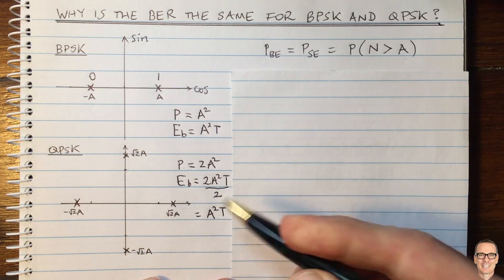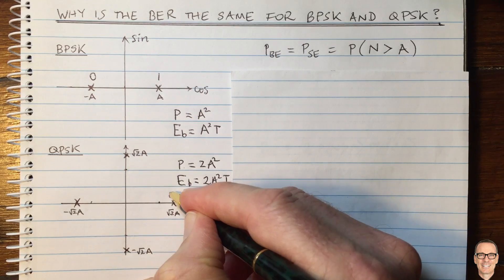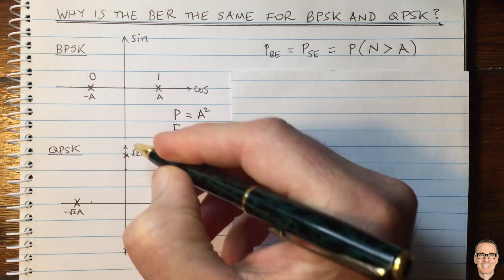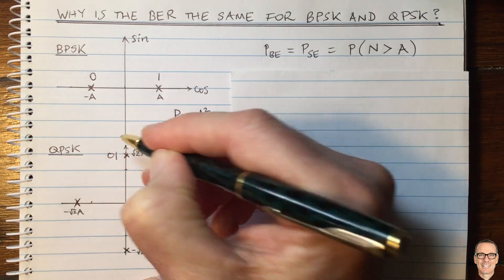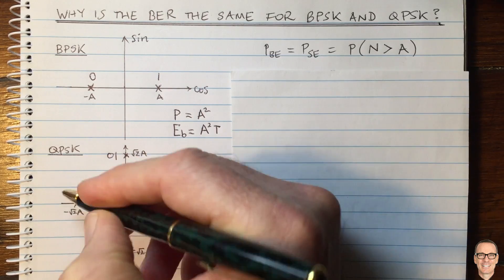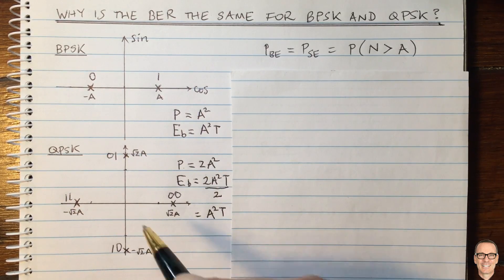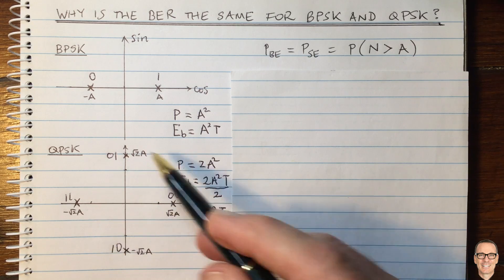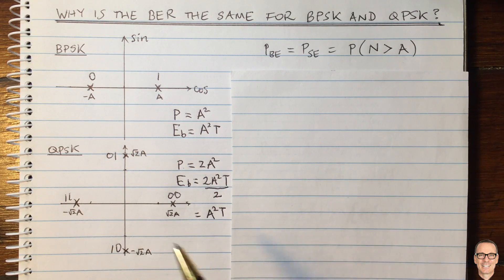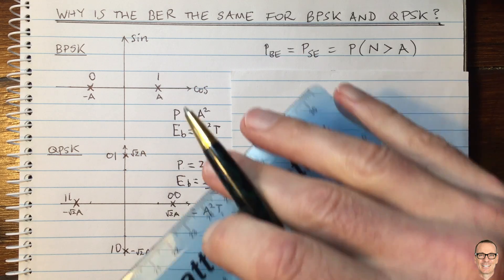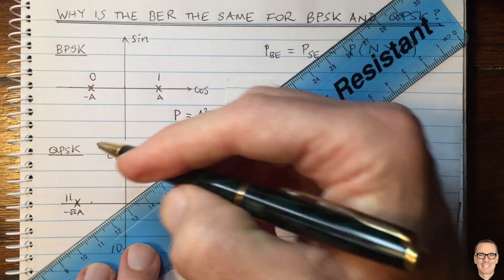Let's see why the bit error rates come out to be the same in this case. We're sending two bits, and I'll draw down here an example of the bits we might map to these points: 0,0 to this one; 0,1 to this; 1,0 here; and 1,1 over here. Now let's think about how we're going to make errors. The boundaries for decision-making are at 45 degrees.